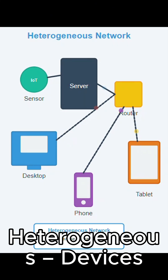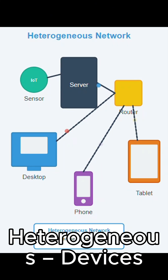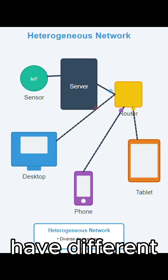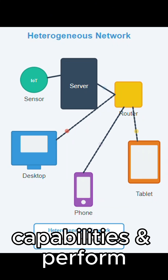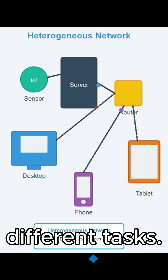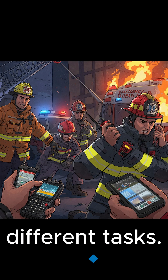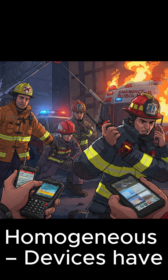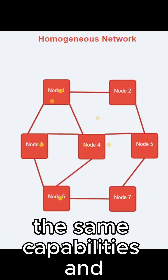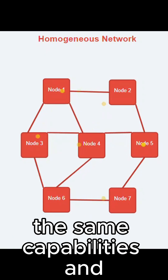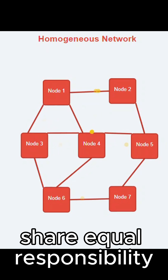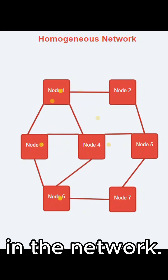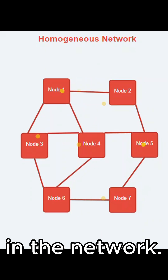Two variants: Heterogeneous — devices have different capabilities and perform different tasks. Homogeneous — devices have the same capabilities and share equal responsibility in the network.